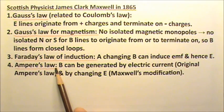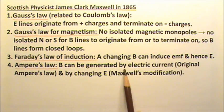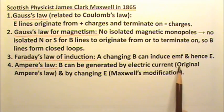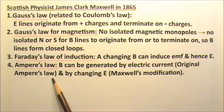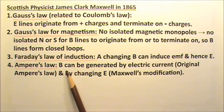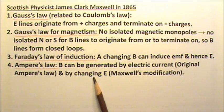And Ampere's law with Maxwell's modification. This law states that magnetic field can be generated by electric current. This is the original Ampere's law. And the magnetic field can be generated by changing electric field. This part is Maxwell's modification.